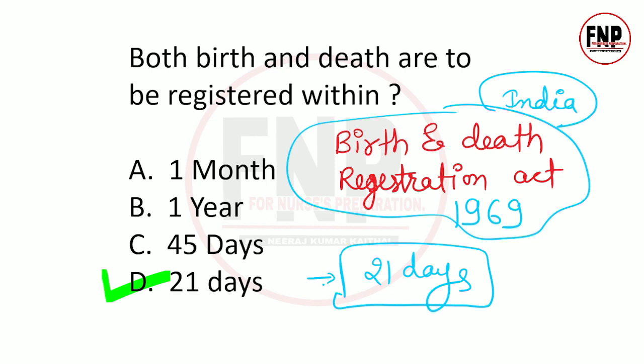ये recent change के अनुसार 21 days है। इससे पहले 1969 के original act में कहा गया था कि death को 7 दिनों में और birth को 21 दिनों में compulsory registration करवाना है। लेकिन अब बदलाव किया गया और birth और death दोनों का registration अब 21 दिनों में करवा सकते हैं।